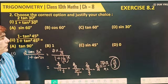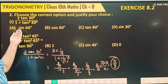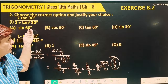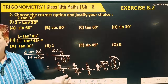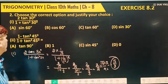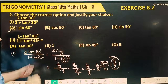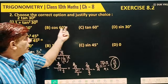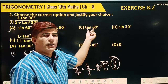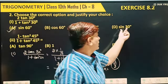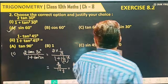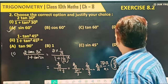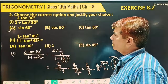So the answer is root 3 by 2. We can directly say this is our answer. For reference: cos 60 is 1 by 2, root 3 by 2 corresponds to cos 30, tangent 60 is root 3, and sine 30 is 1 by 2. So the first option is your answer.